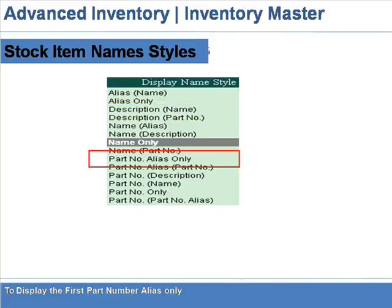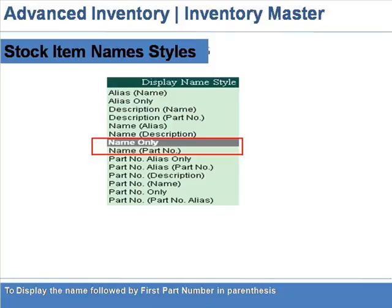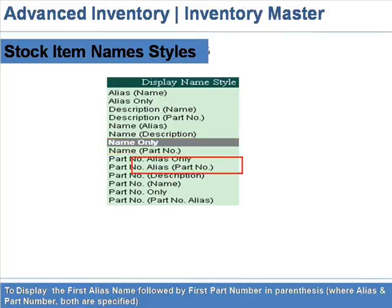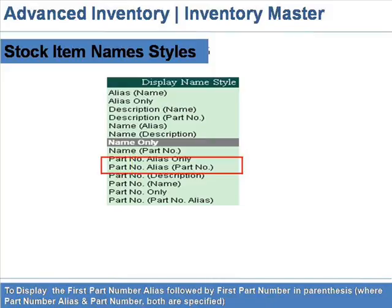Part Number Alias Only: to display the first part number alias only. Name (Part Number): to display the first alias name followed by first part number in parenthesis, where alias and part number both are specified. Part Number Alias (Part Number): to display the first part number alias followed by first part number in parenthesis, where part number alias and part number both are specified.